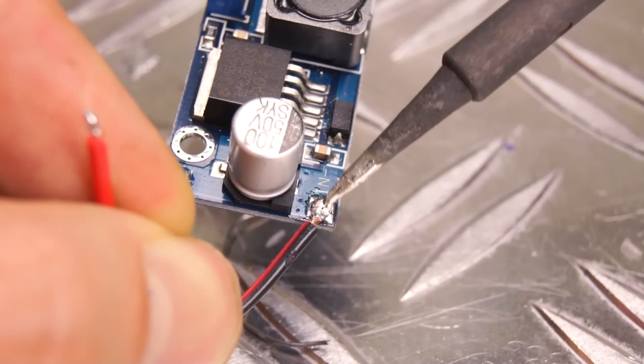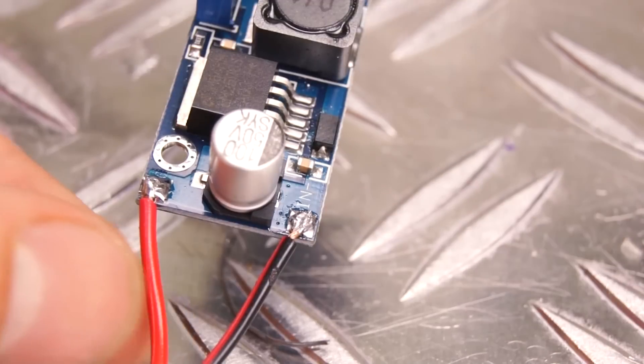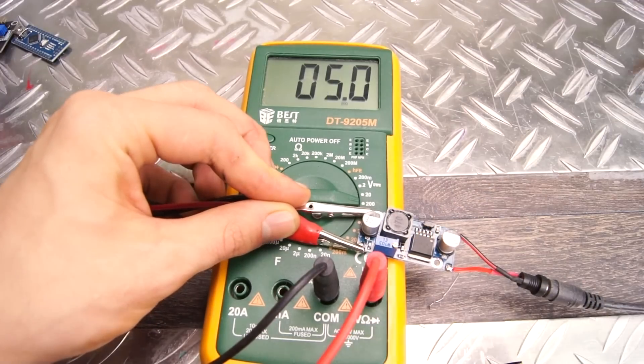To power everything, we need a 5V power source. I didn't have that available, so I'm using this voltage step-down module with a 12V power source instead.